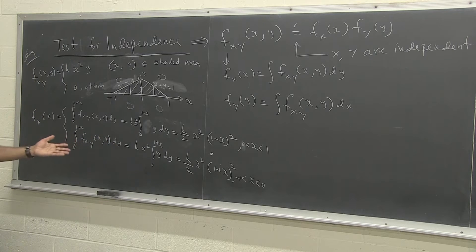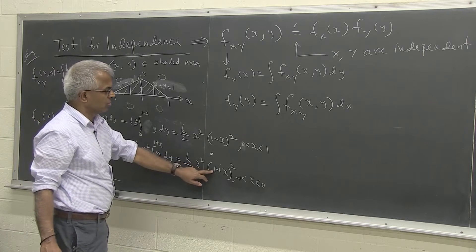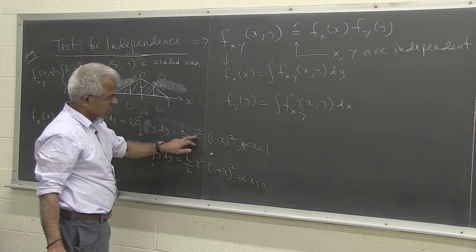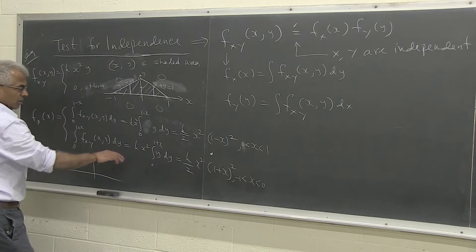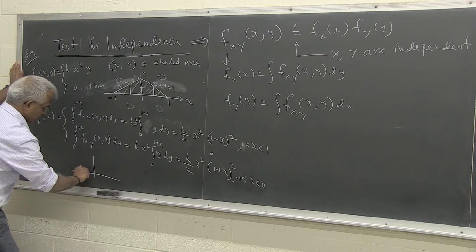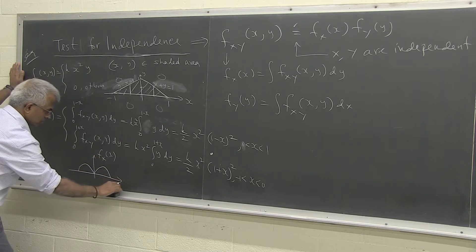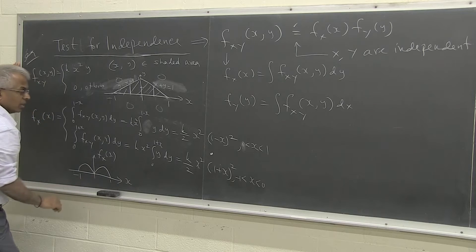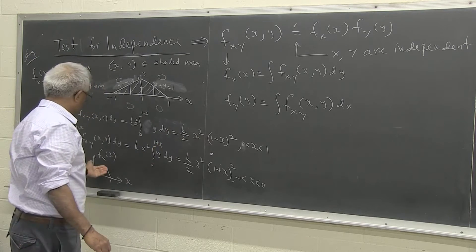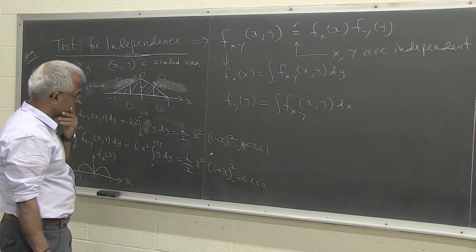We can find k by requiring the area under f_X(x) to equal 1. Notice that when x = −1, 0, or 1, the density function is 0, and between those values it has a cubic shape — everything is positive. The function f_X(x) looks like a bump from −1 to 1, and we can find the maximum by differentiating and equating to 0.